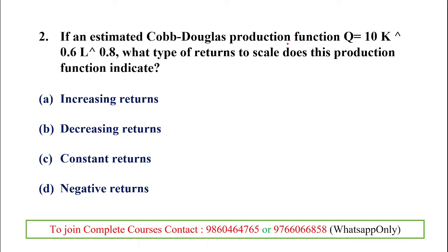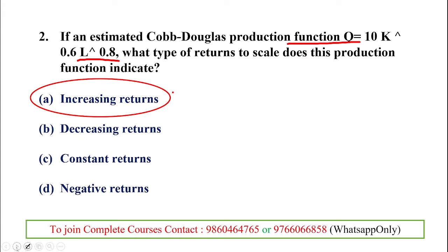Question 2: Given the function Q = 10K^0.6 × L^0.8, what are the returns to scale? The value 0.6 is the parameter for capital (K) and 0.8 is the parameter for labor (L). These are the alpha and beta parameters. To find returns to scale, we sum them: 0.6 + 0.8 = 1.4, which is more than one.